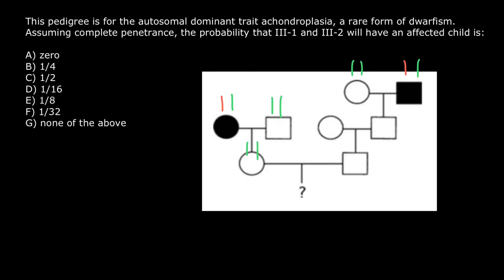So for III-1 and III-2 to have an affected child, chances are zero.